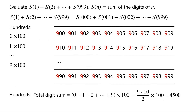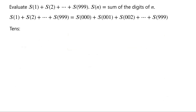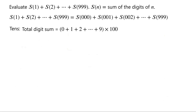Similarly, for the tens place, the total digit sum is equal to (0 + 1 + 2 + ... + 9) times 100, which is equal to 4500.